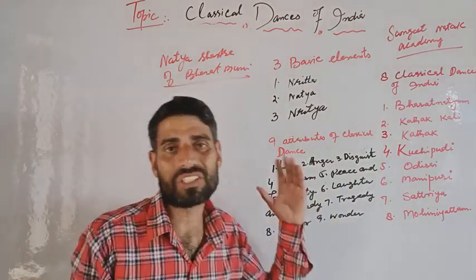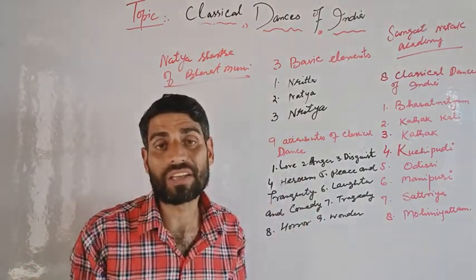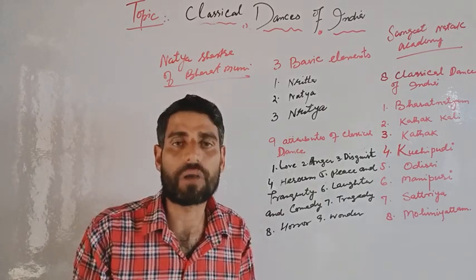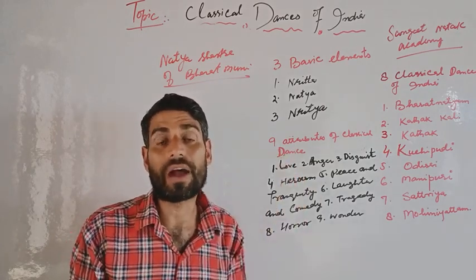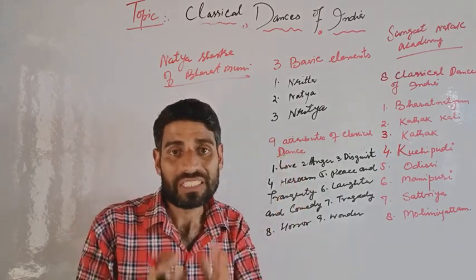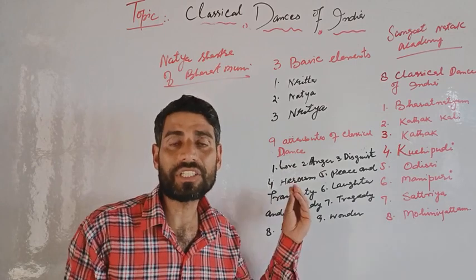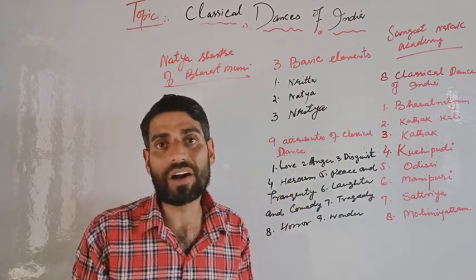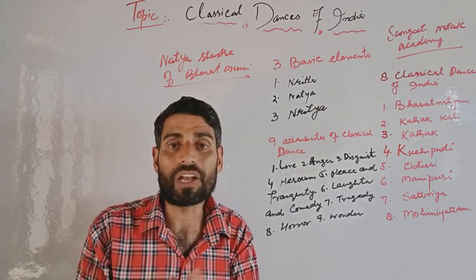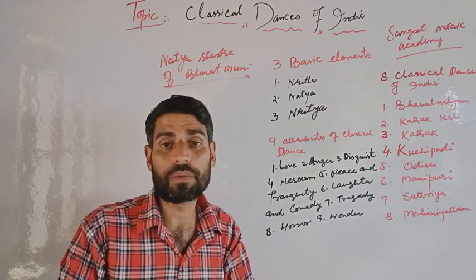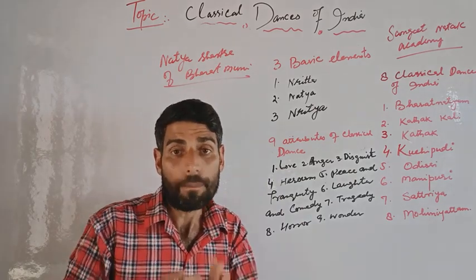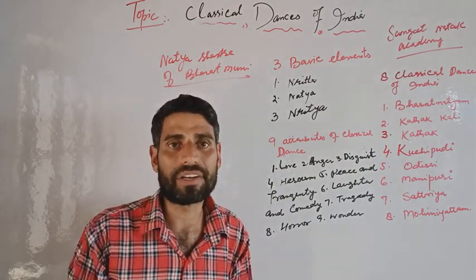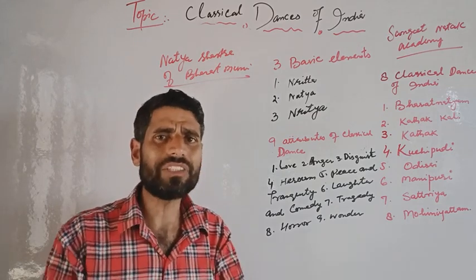The Natya Shastra is the earliest literature on music and drama, and the oldest surviving ancient text on performing arts. It was written by Bharat Muni, who is considered the father of Indian theatrical art.